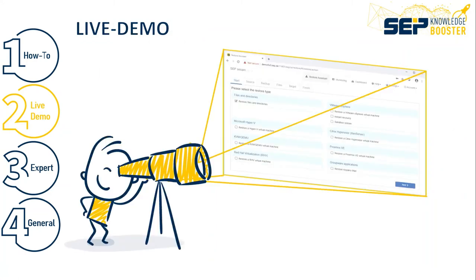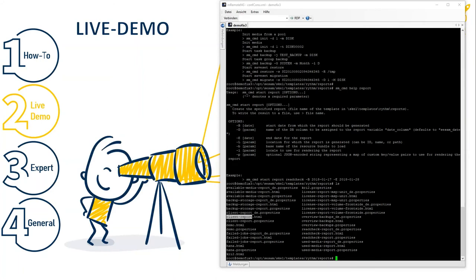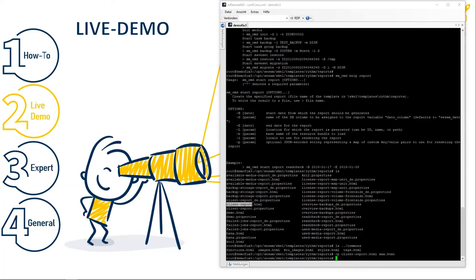Now let's go back to our command line window. We'll first show the include files in the comments section. Then we copy the client report: 'copy client_report.html to xxx.html'. That's what we do.